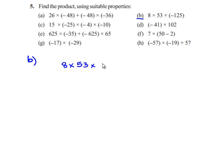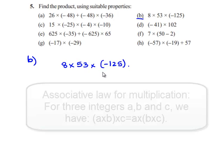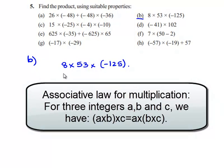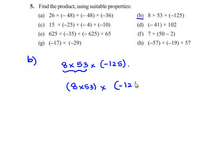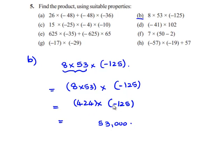We'll see the second bit: 8 multiplied by 53 multiplied by negative 125. Here we use the associative property of multiplication. We'll first group the first two integers — that is, 8 into 53 grouped together — multiplied by negative 125. That gives 8 into 53 equals 424, and we are left with negative 125.